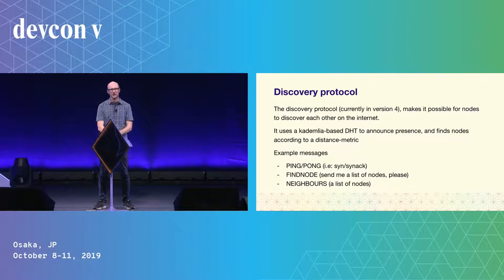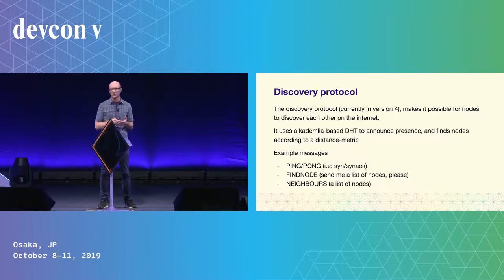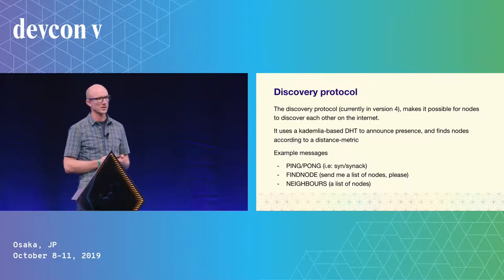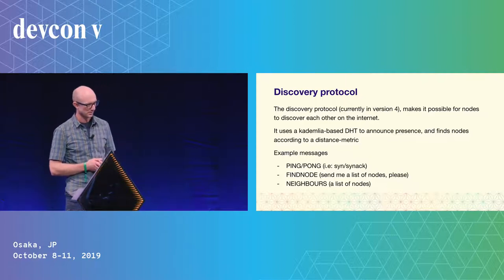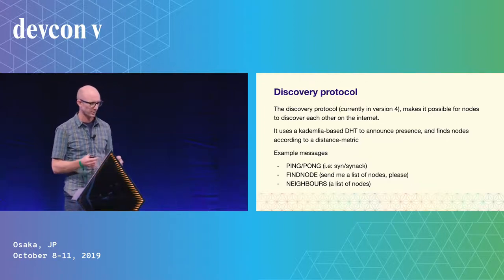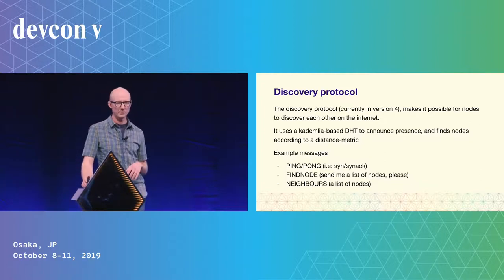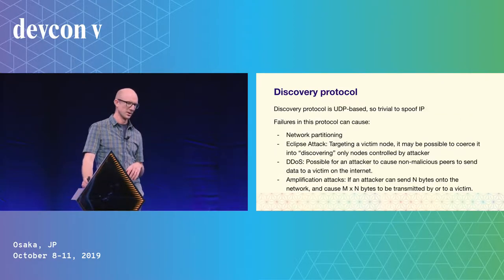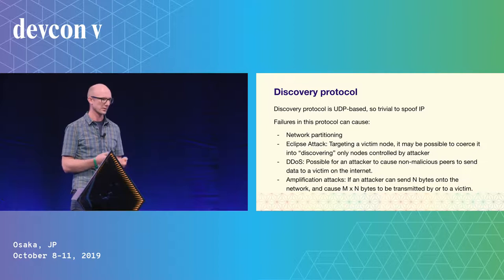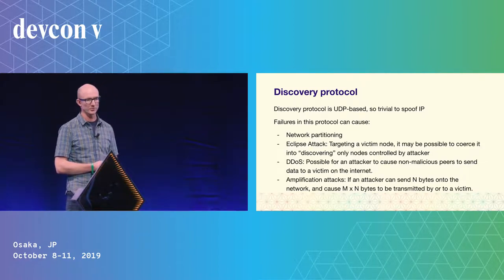Ethereum peer-to-peer networking is built upon the premise that a node can find another node on the internet, which is not a trivial task. For that we have the discovery protocol, currently in version 4, with a version 5 being worked on. This uses a Kademlia distributed hash table to announce presence, and using this DHT we can find nodes according to a distance metric — the distance has nothing to do with geographic location or network distance. The discovery protocol is not based on TCP but UDP.